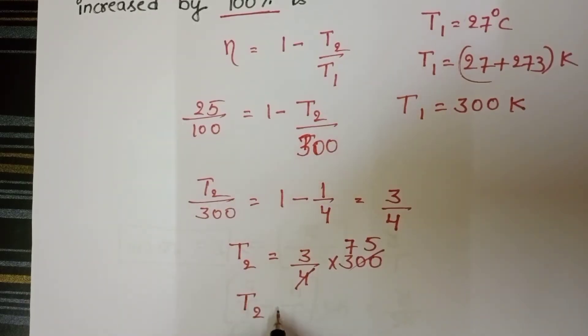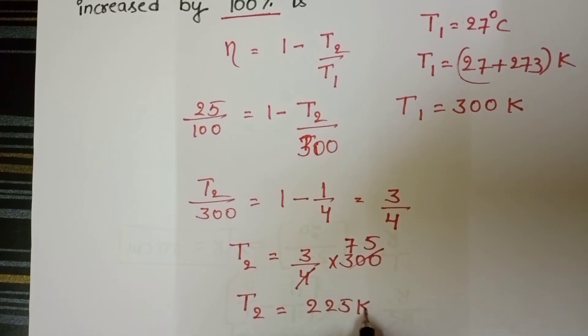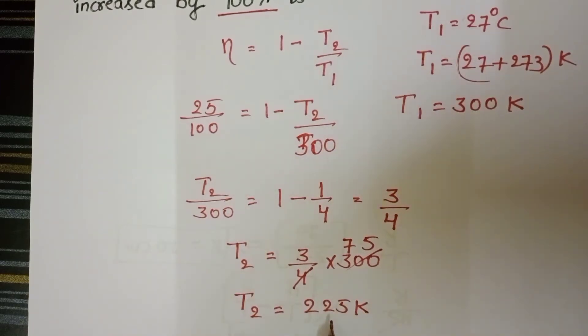T2 equals 3 by 4 into 300. T2 equals 225 Kelvin. So temperature of sink equals 225 Kelvin.